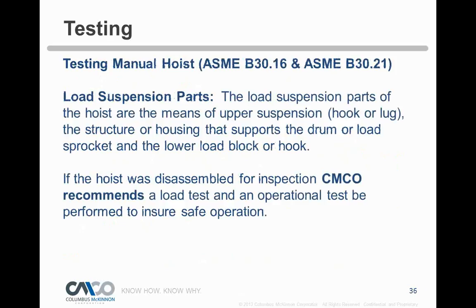Load suspension parts are defined as: the upper suspension hook or lug mount, the structure or housing that supports the drum, and the lower hook block. Gears are transmission parts — technically replacing them doesn't require a load test under ASME, though CM recommends one. Similarly the load brake is classified as a transmission part. Trolley wheels and axles are load-bearing parts, so replacing them does require a load test. Wire rope or chain typically don't require a load test since manufacturers test them, though if you're already doing it, keep doing it.